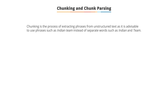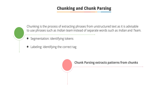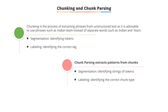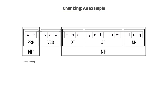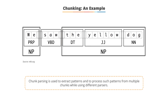The process of extracting phrases from unstructured text is called chunking. Instead of using simple tokens which may not represent actual meaning, it is advisable to use phrases such as 'Indian team' as a single word. Chunking segmentation identifies tokens and labeling identifies the correct tag. For chunk parsing, the segment identifies strings of tokens and labeling identifies the correct chunk type. For example, 'yellow' is an adjective, 'dog' is a noun, and 'the' is the determiner, chunked together into a noun phrase.